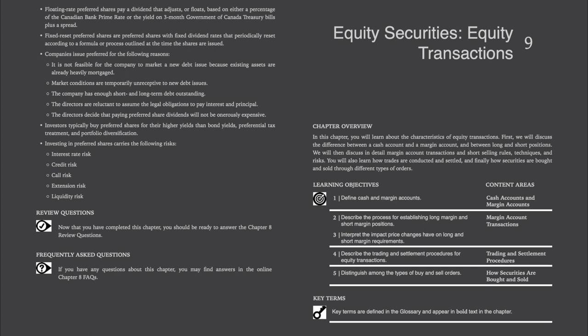There are four main areas: cash accounts and margin accounts, margin account transactions, trading and settlement procedures, and how securities are bought and sold. All of the key terms and their definitions will be listed at the end of this recording.